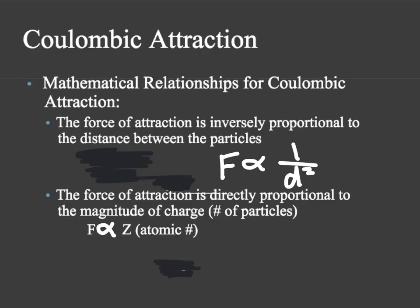We can express this in mathematical relationships. The first factor was distance: the farther away, the greater the distance, the less the force. So the force of attraction is inversely proportional to the distance between the particles, and it's an inverse square — 1 over D squared. So we can say F is proportional to 1 over D². As we increase D, F gets smaller; if we have a very small D, then F gets bigger, just like we saw in the activity.